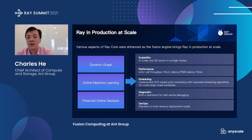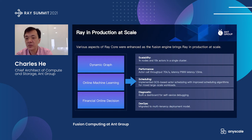We have improved Ray in the following aspects in order to push it to scale in production. For scalability, we can run 1,000 nodes and about 10,000 actors in a single cluster. For performance, we have achieved a throughput of 70,000 per second with very good latency. We also did lots of scheduling work to guarantee the availability of the whole system, and significant engineering work to maintain the cluster and troubleshoot any problems.